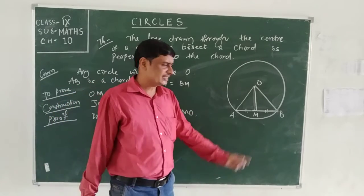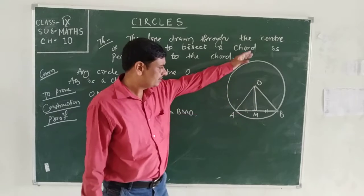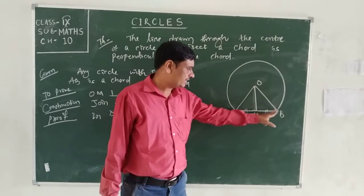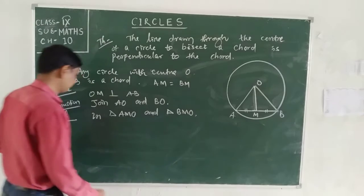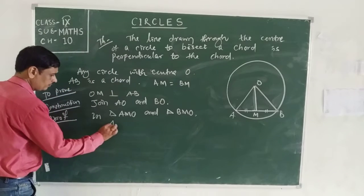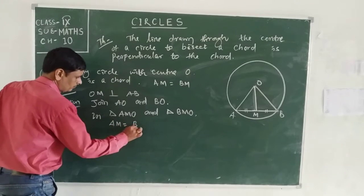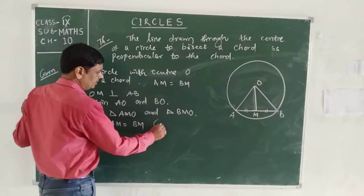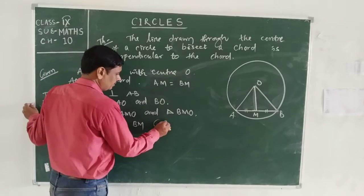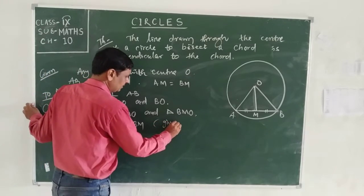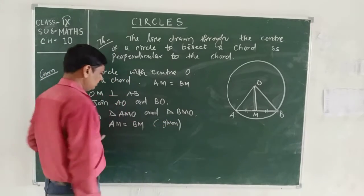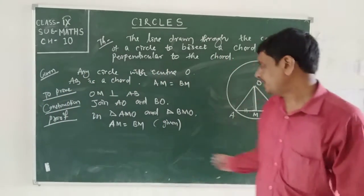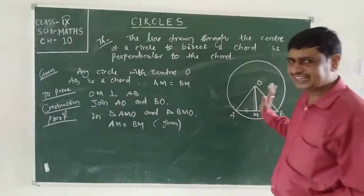In triangles OAM and OBM: AM is equal to BM — this is given, since OM bisects AB.